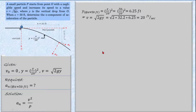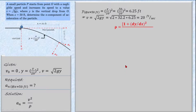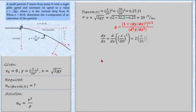Now the only unknown parameter for evaluating the normal acceleration is the radius of curvature. The governing equation for the radius of curvature ρ for any function y as a function of x is: ρ = [1 + (dy/dx)²]^(3/2) / |d²y/dx²|. To evaluate this, we need to differentiate the function y with respect to x.